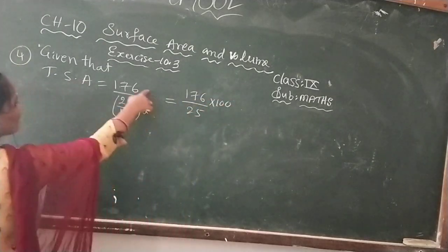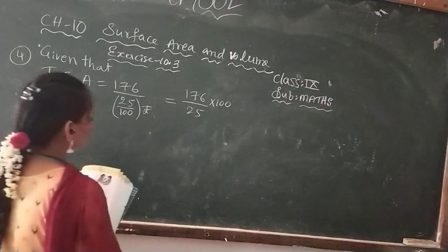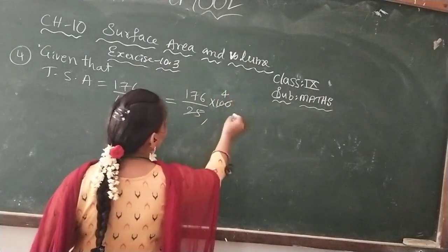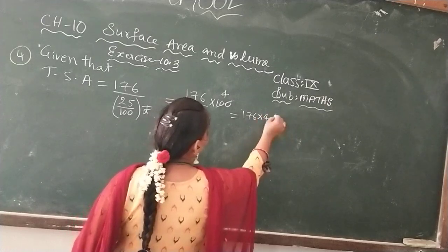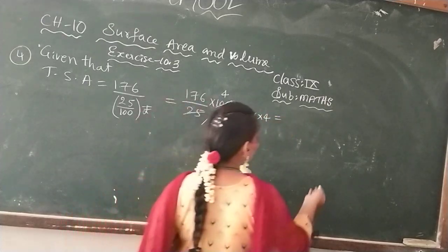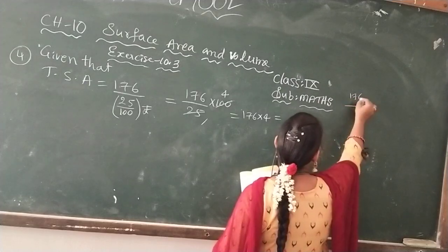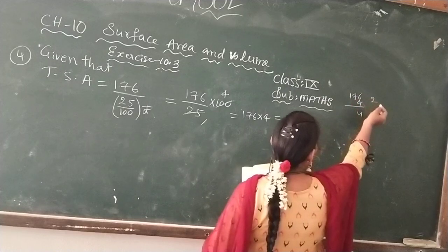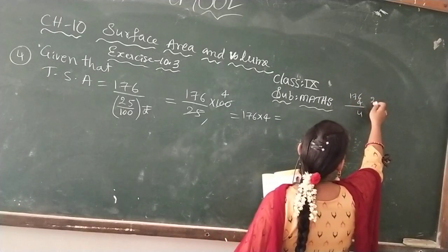Given that total surface area, the cost is 25 paise per cm². Actually, 25 paise per cm², you can divide by 100 and it will convert into this. Now, which implies 176 divided by 25 by 100. This denominator I am taking as numerator. So 25 by 100 becomes 176 times 4. 176 times 4, if you do multiplication, that is 704.